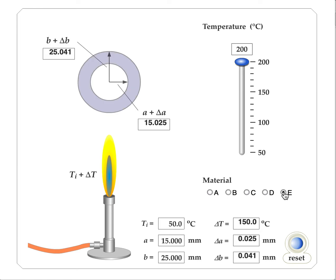And then finally, when I look at the last material, I see that again, it also changes differently. The inner radius is only 0.025, and the outer radius is 0.041.